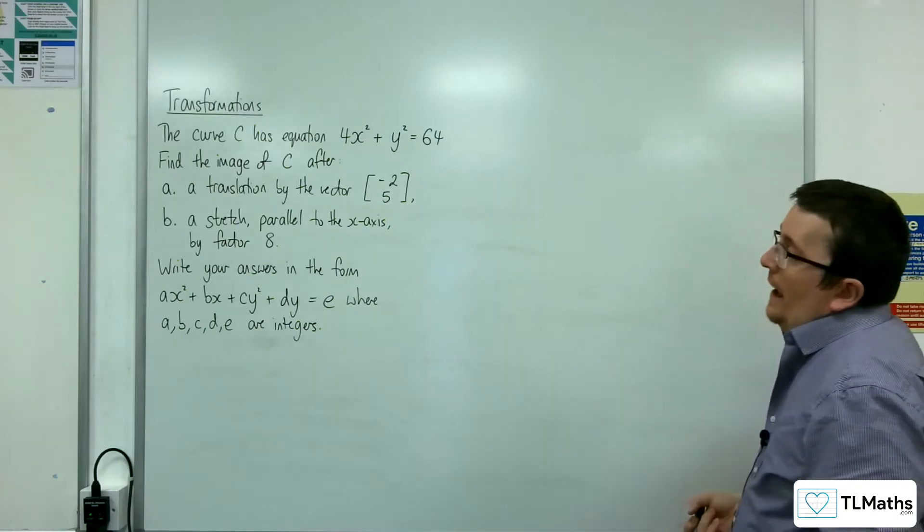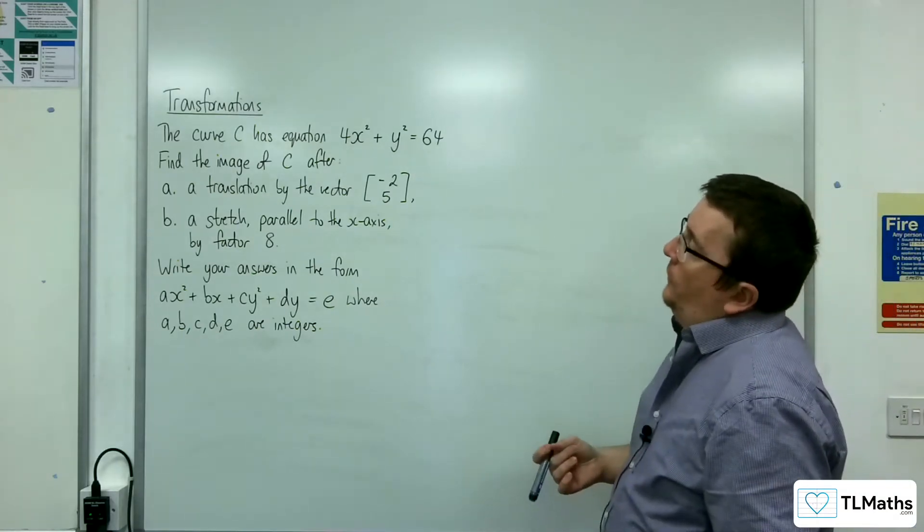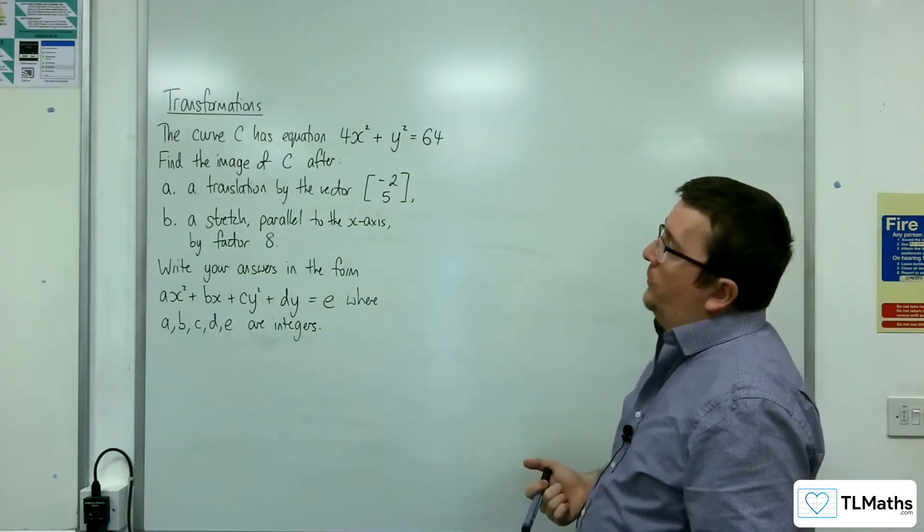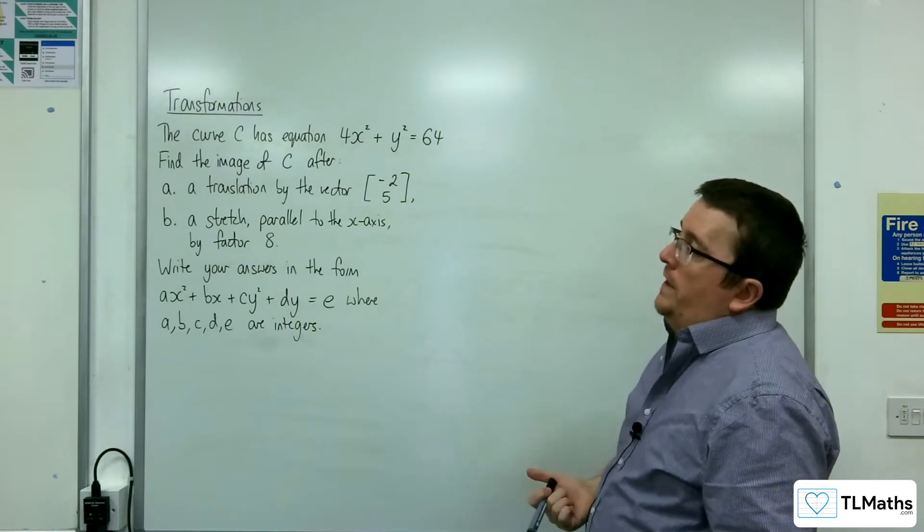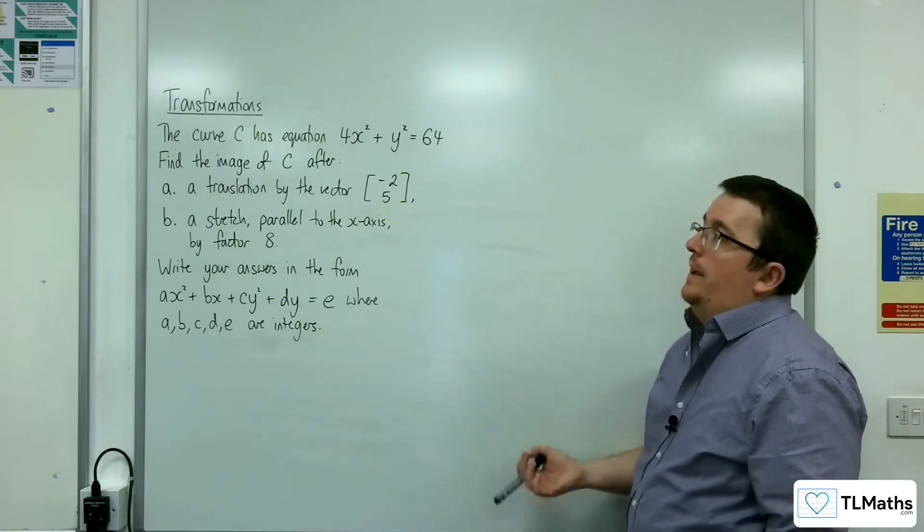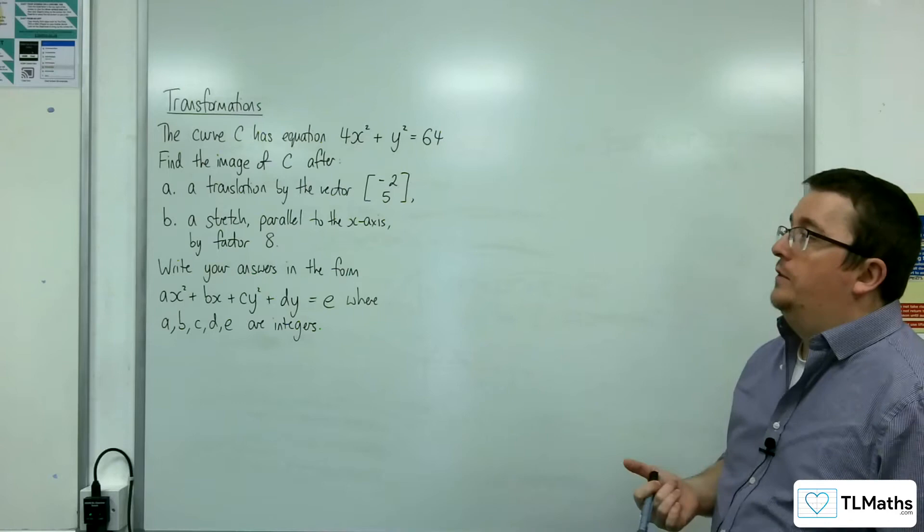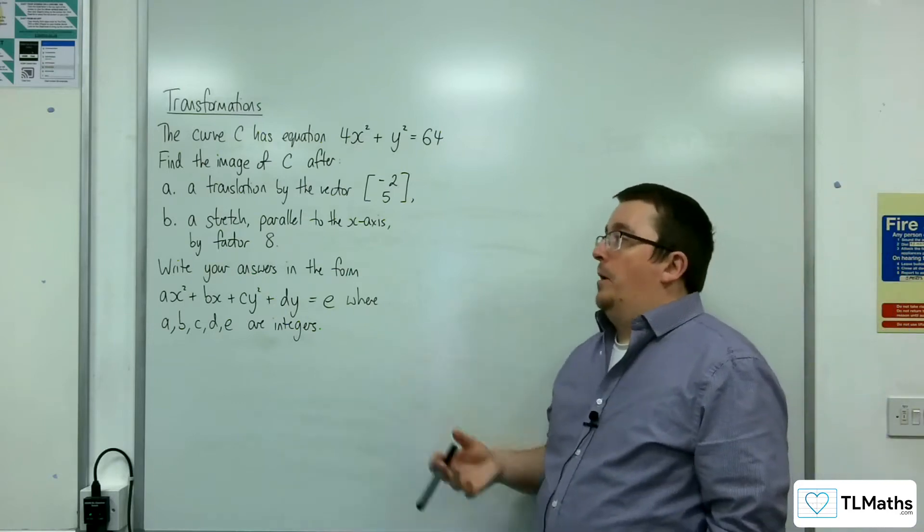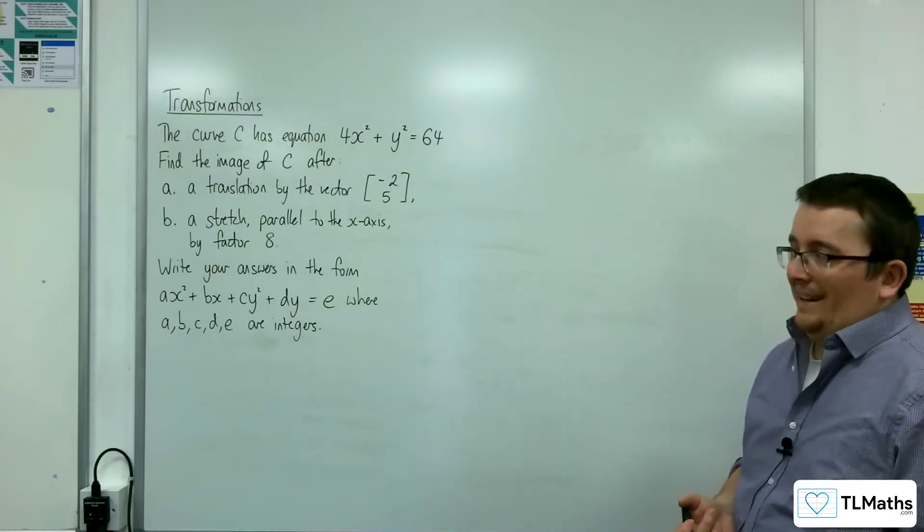In this video, we're going to be looking at this curve C, which has the equation 4x squared plus y squared equals 64. Find the image of C after part A, a translation by the vector minus 2, 5, and separately, part B, a stretch parallel to the x-axis by factor 8.